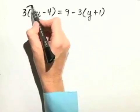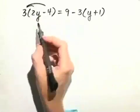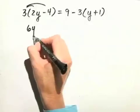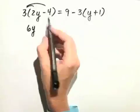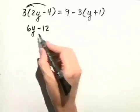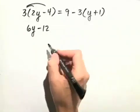First, we'll distribute the 3 through the parentheses, and we'll have 3 times 2y, which is 6y, and then 3 times negative 4 gives us negative 12. On the left-hand side, we just have 6y minus 12.